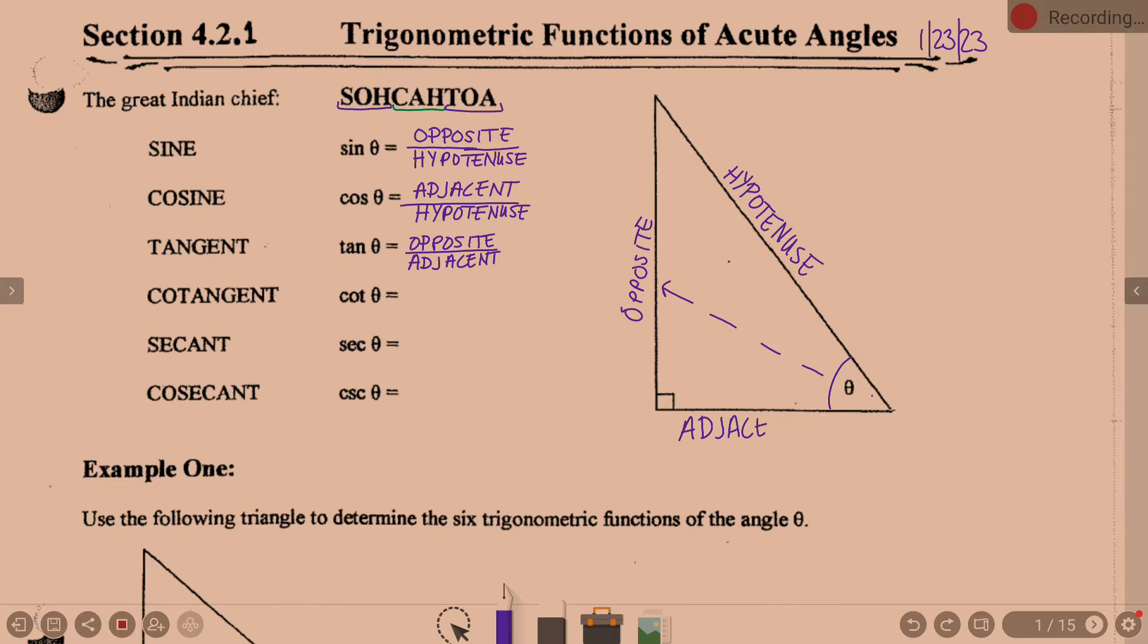So then by process of elimination. So what do we have left here? Adjacent. The idea, guys, adjacent is next, next door. It's your next door neighbor. It's next to the angle. So adjacent is a side that is touching the angle in question. So that's where we're at to begin with.